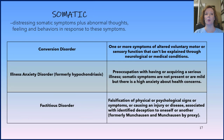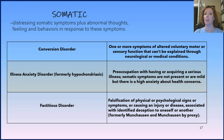The next family of disorders are the somatic disorders. The common thread here is distressing somatic symptoms plus abnormal thoughts, feelings, and behaviors in response to those symptoms. This family includes conversion disorder, illness anxiety disorder (which used to be called hypochondriasis), and factitious disorder. You may want to pause the video here to read thoroughly through the chart.